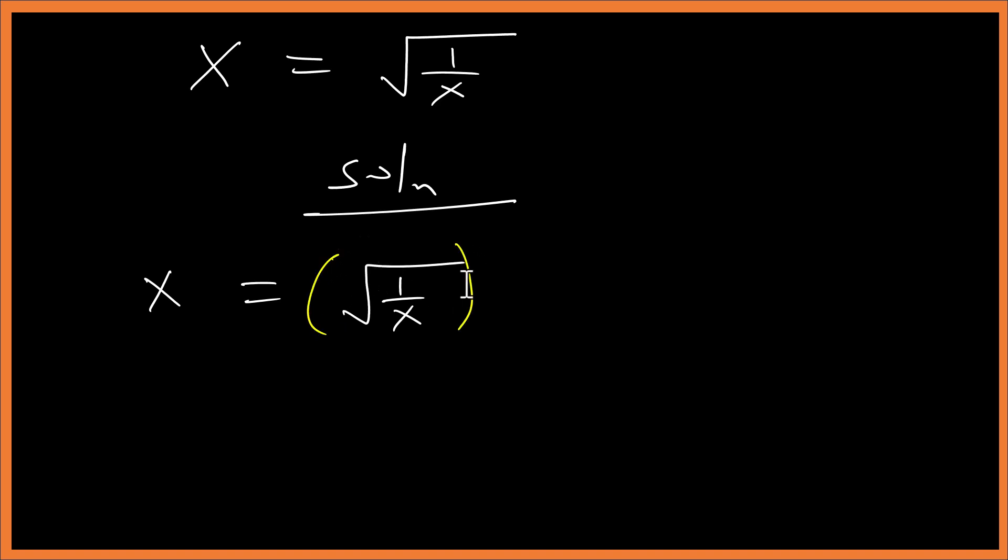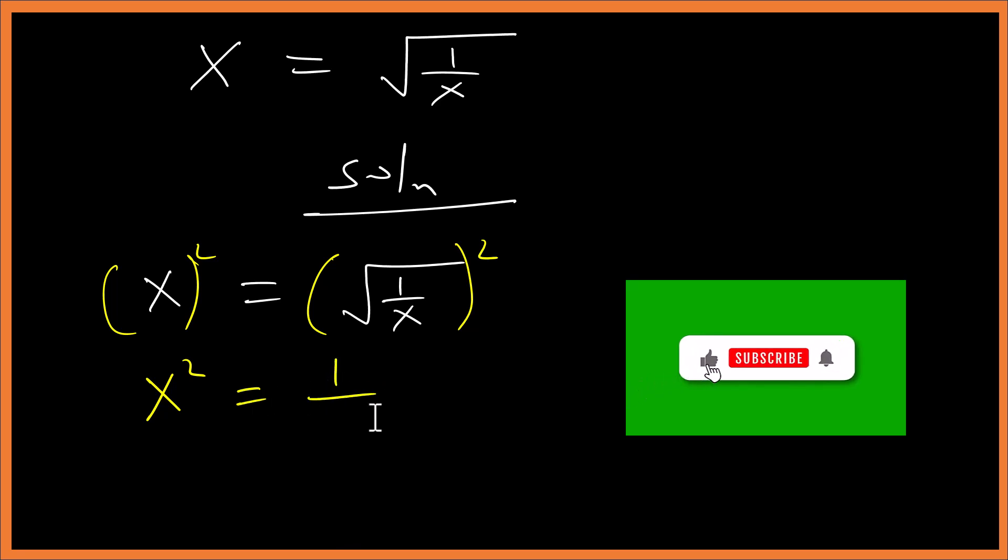To remove the square root, we square this side, x squared, and we have 1 over x.